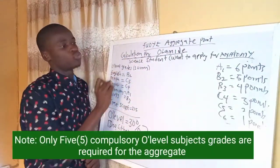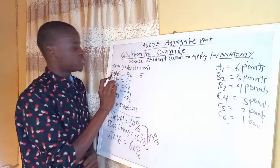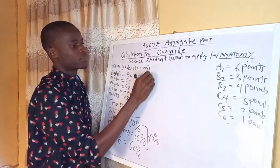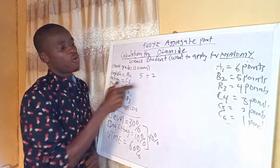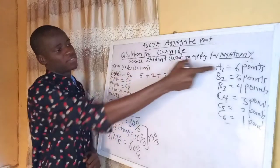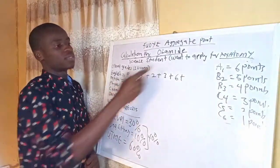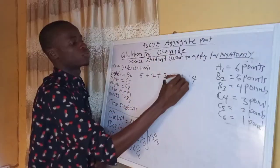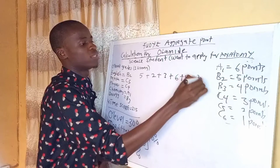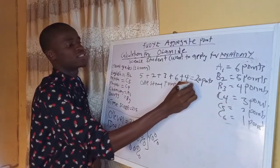For English he has B2, which is 5 points. For Mathematics he has C5, which is 2 points. For Physics he has C4, which is 3 points. For Chemistry he has A1, which is 6 points. And for Biology he has B3, which is 4 points. Now all these together, that is 20 points.